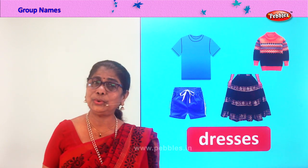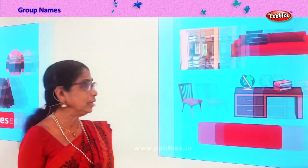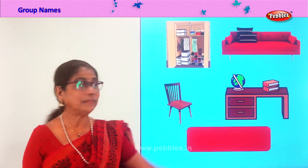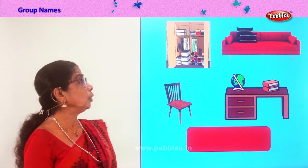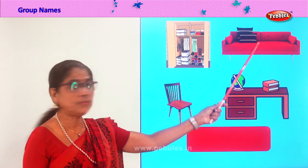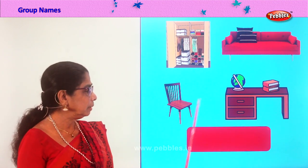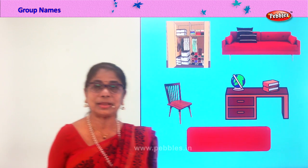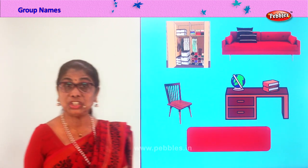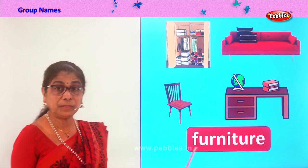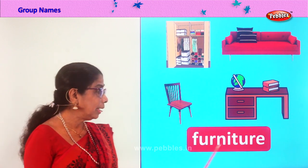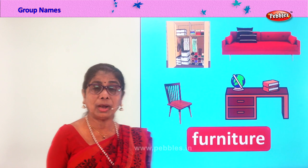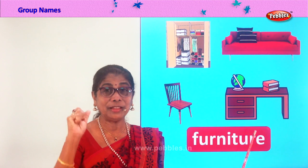Now let's go on to another group. Are you enjoying, children? You have a cupboard to put all your things, a sofa, table, and chair. What is the group name for this? Furniture! Spell furniture: F-U-R-N-I-T-U-R-E. All this put together — group name: furniture.